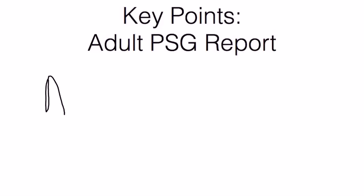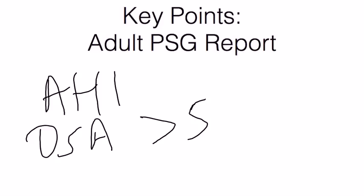The next is the AHI, or apnea-hypopnea index — the total number of apneic and hypopneic episodes per hour of sleep. In obstructive sleep apnea patients, you're looking for an AHI above 5, especially if the patient has sleep-related complaints such as non-restorative sleep, snoring, waking up dyspneic, or complaints from a bed partner, along with comorbidities such as hypertension or heart disease. The evidence for treatment effectiveness tends to be strongest in patients with moderate to severe OSA, above 15 events per hour, though patients may be treated above 5 if they present with sleep complaints.